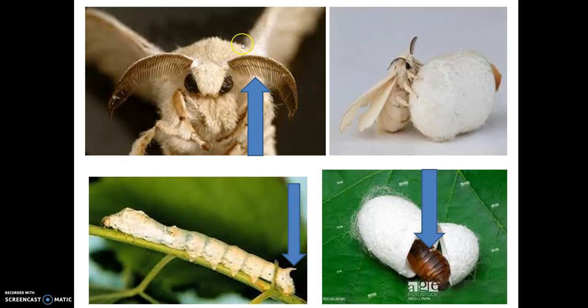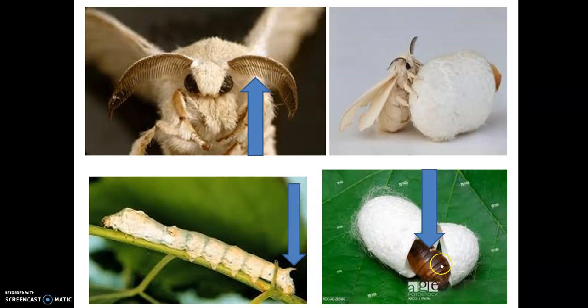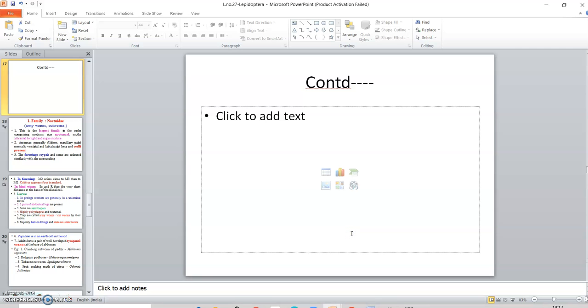The example is the mulberry silkworm, Bombyx mori. You can see the bipectinate antennae in the adult. The larva has a caudal horn. The cocoon is made up of natural silk, and inside the cocoon you can see the pupa.